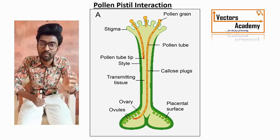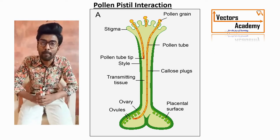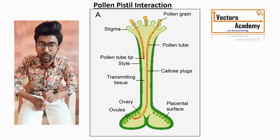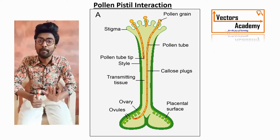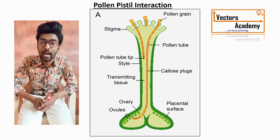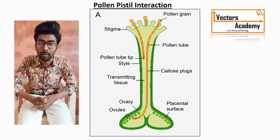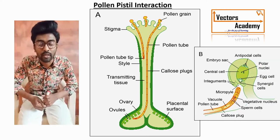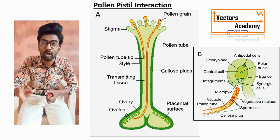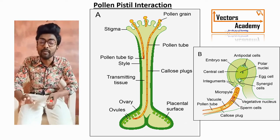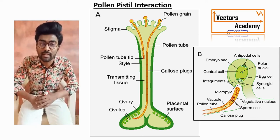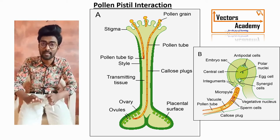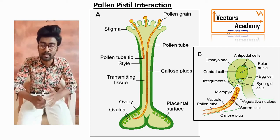The content of the pollen grain — that is, the male gamete and the cytoplasm — will enter into the pollen tube. Once the pollen tube is ready, it will start growing, passing through the tissues of the stigma, through the entire length of the style, and finally reaching the ovary. Once the pollen tube reaches the ovary at the micropylar end, one of the synergid cells having filiform apparatus will provide a proper direction and passage for the entry of the pollen tube into the ovary.